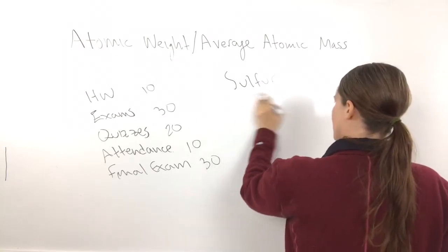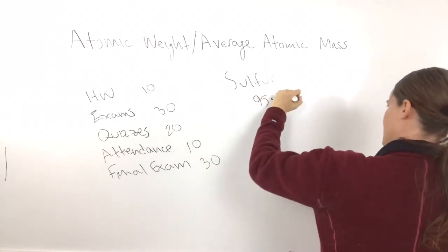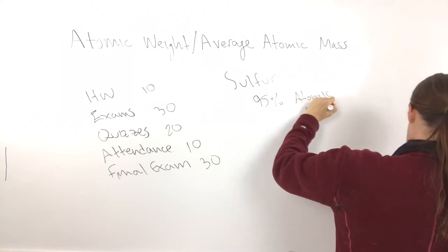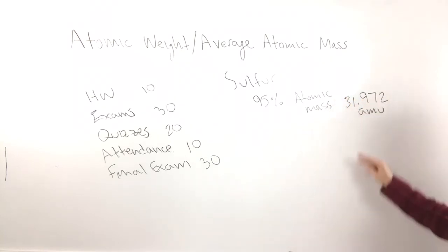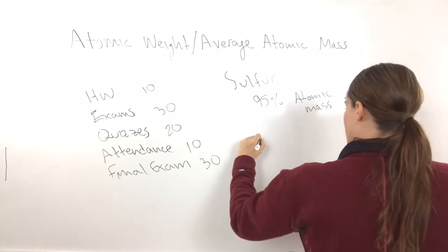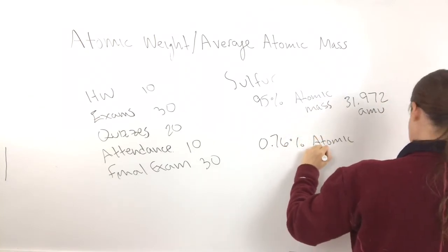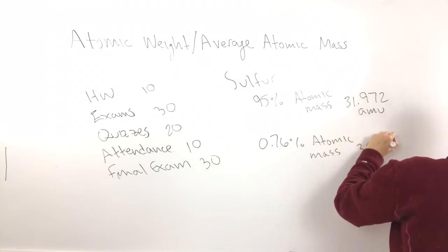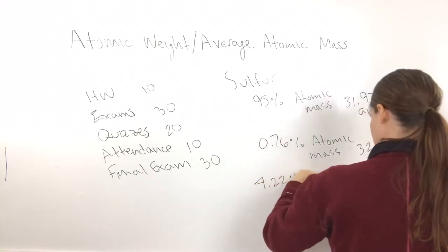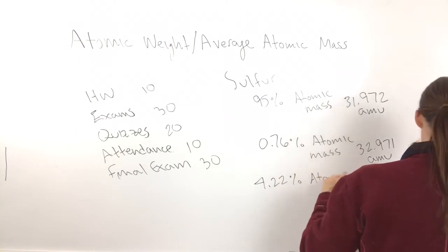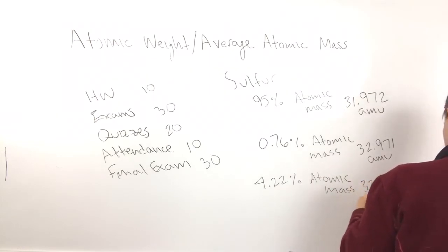For sulfur, ninety-five percent of sulfur atoms have an atomic mass of 31.972 AMU — remember, AMU is atomic mass unit. We have 0.76 percent with an atomic mass of 32.971 AMU, and 4.22 percent with an atomic mass of 33.967 AMU.